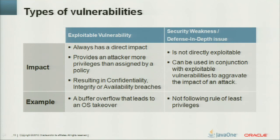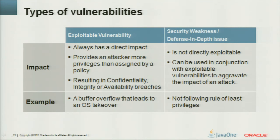What types of vulnerabilities can be distinguished? There is the exploitable vulnerability, or there is a security weakness. The exploitable vulnerability always has a direct impact — it allows an attacker to get more privileges than assigned by policy, leading to breaches in confidentiality, integrity, or availability. An example is a buffer overflow that leads to an OS takeover. Security weaknesses are not directly exploitable but can extend the impact of an attack — like not following the rule of least privileges.